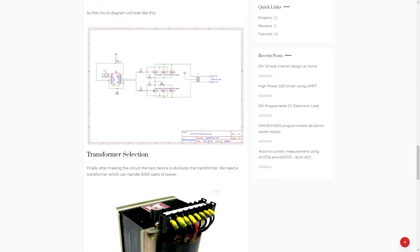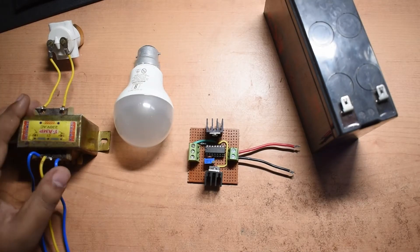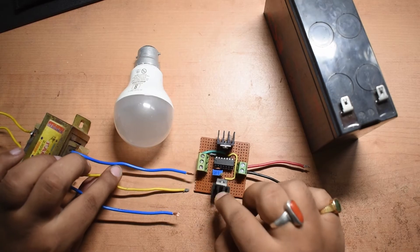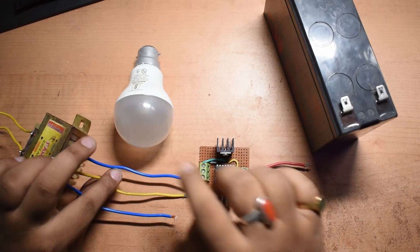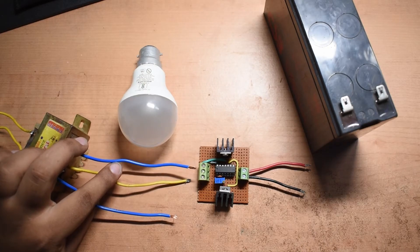If you want more details about this project obviously you can follow my website in the link in the description. Now I will be connecting the terminal of this transformer to the inverter circuit and then I will be connecting this light bulb and after that I will be connecting with this battery to test the output.